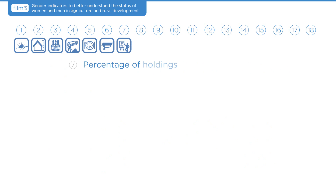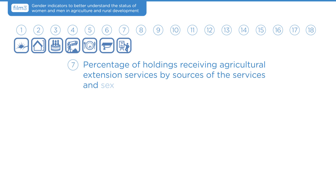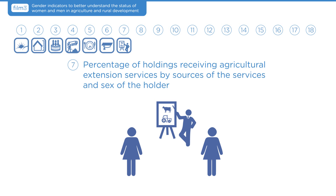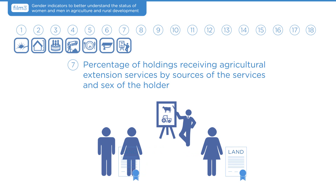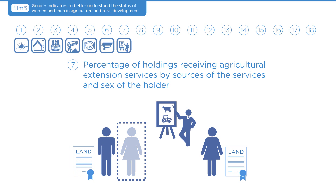Indicator 7 is the percentage of holdings that received agricultural extension services by sources of the services and sex of the holder. Women may have limited access to extension services and benefits if holdings are registered in the name of their husbands or other male relatives. These extension services are important sources of knowledge, credit, technology, and privileges. Limited access can therefore hinder the number of opportunities a person can have in agriculture and entrepreneurship in rural areas.